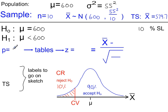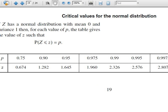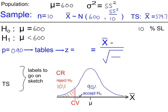We're going to look up a probability of 0.90, which is 90%. Going to the normal tables, at 90% — 0.90 — the Z value is 1.282. And because it's on the left-hand side, it's negative.